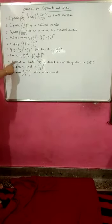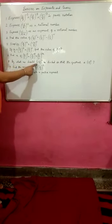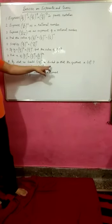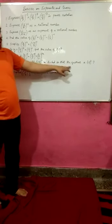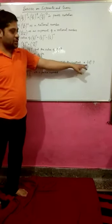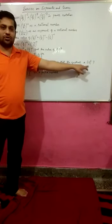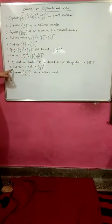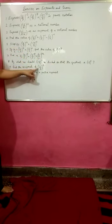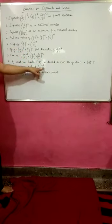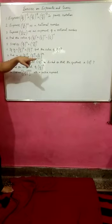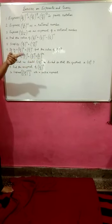Next question: by what number should (-3)^7 be divided so that the quotient is (-3)^2? Next: find the reciprocal of (2/3)^-3. First, you have to convert this negative power into positive, then you have to find the reciprocal of that.